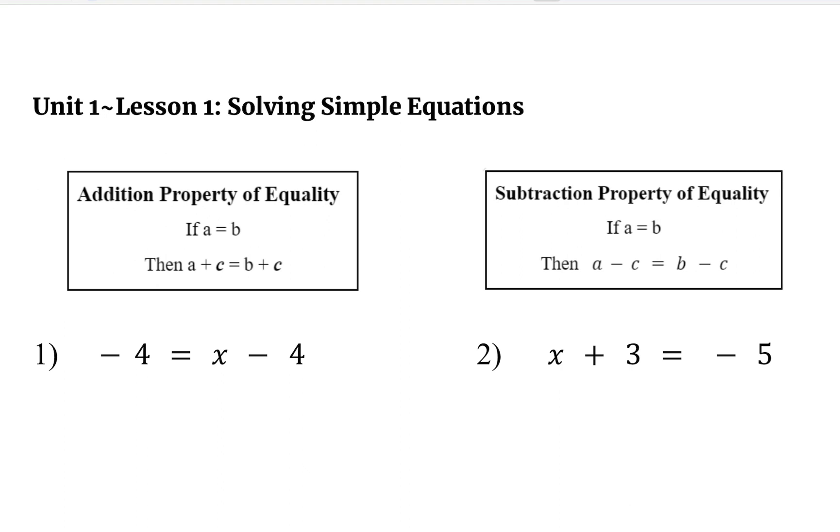Number one example is an example of where addition property of equality is being applied. That means we are going to do the inverse of negative 4, and that would be adding 4 on both sides. So in doing so, this will leave us with x on the right-hand side and on the left side it will give us a 0. So that means 0 is equal to x, or we can flip our answer into x equals 0.